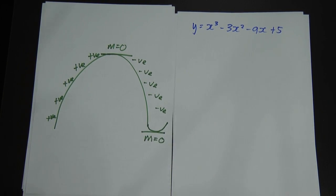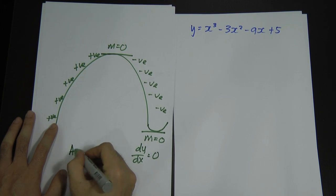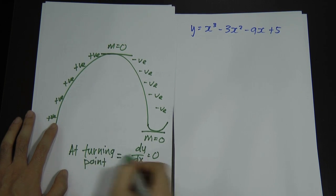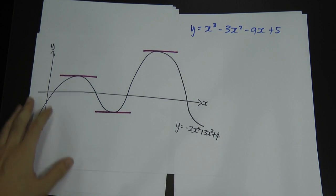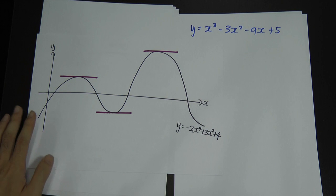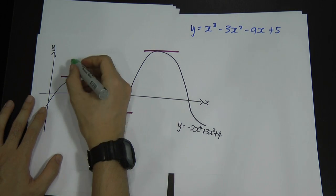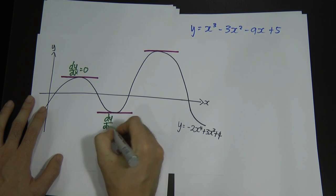This is the reason why when you solve a question, you always do dy/dx = 0 at a turning point. At a turning point, dy/dx will equal zero. Depending on the pattern of the graph, you can have more than one turning point. For example, a graph might have three turning points. At all of those turning points, dy/dx = 0 — this is fixed.